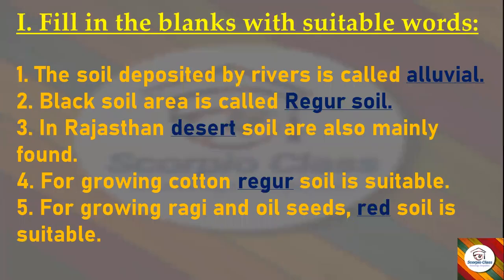Now let's get started with our first main: Fill in the Blanks. The soil deposited by rivers is called — answer: alluvial soil. Black soil area is called — answer: regur soil. In Rajasthan, dash soil is mainly found — answer: desert soil. For growing cotton, dash soil is suitable — answer: regur soil. For growing ragi and oil seeds, dash soil is suitable — answer: red soil. With this we come to an end with fill in the blanks.